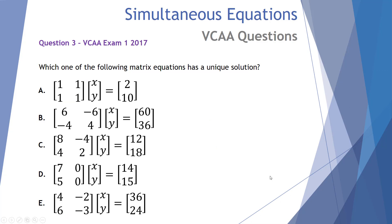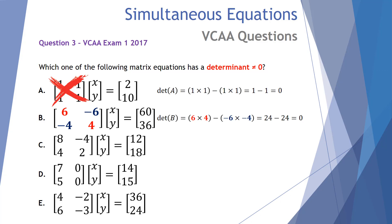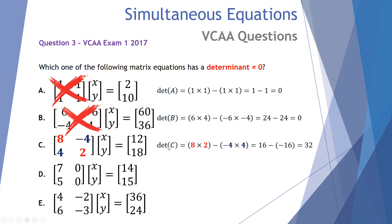Question two from VCAA Exam 1, 2017: which of the following matrix equations has a unique solution? A unique solution means the determinant is not equal to zero. We only need to examine the first (coefficient) matrix in each option. Option A: 1×1 − 1×1 = 0. Not unique. Option B: 6×4 − (−4×−6) = 24 − 24 = 0. Not unique. Option C: 8×2 − 4×(−4) = 16 + 16 = 32. This does have a determinant not equal to zero — this has a unique solution. That's our answer.